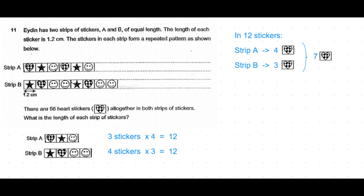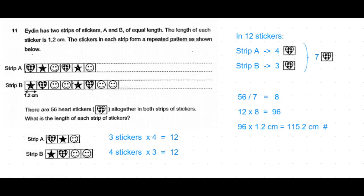We know there are a total of 56 heart stickers, which means 56 divided by 7 equals 8. That means eight such 12-sticker units is the total length of the strip. 8 times 12 gives a total of 96 stickers.